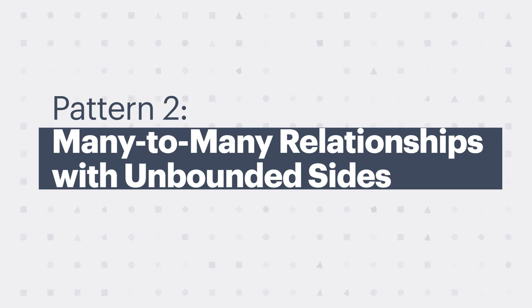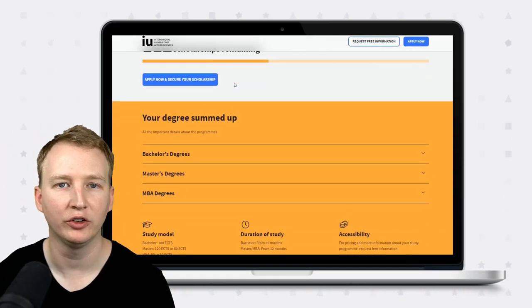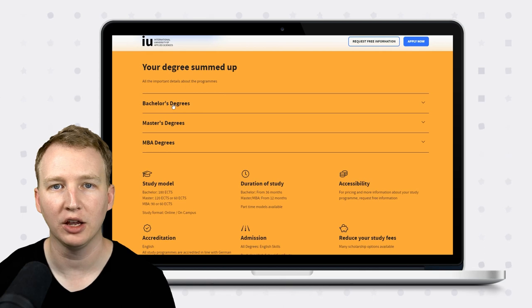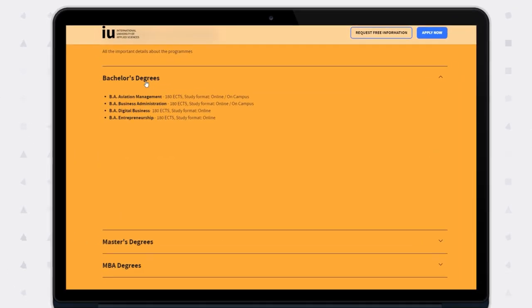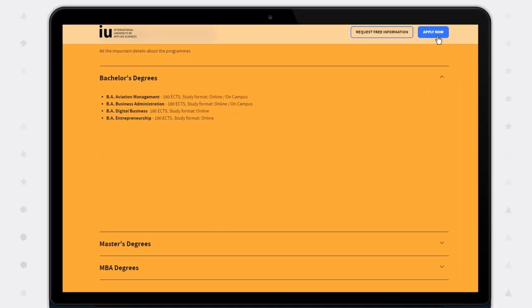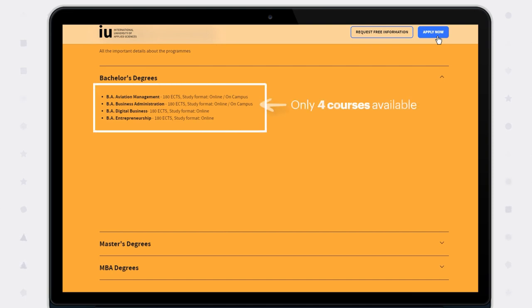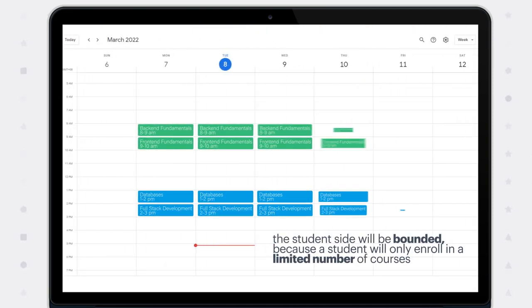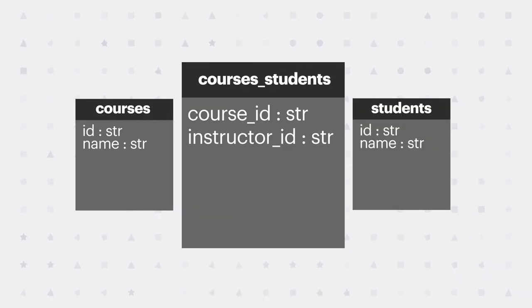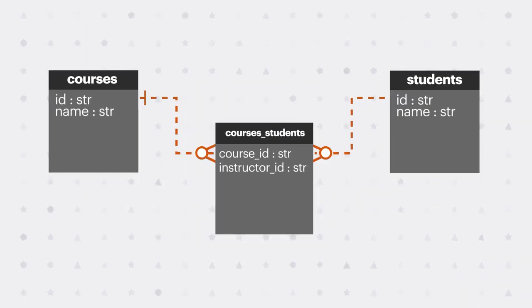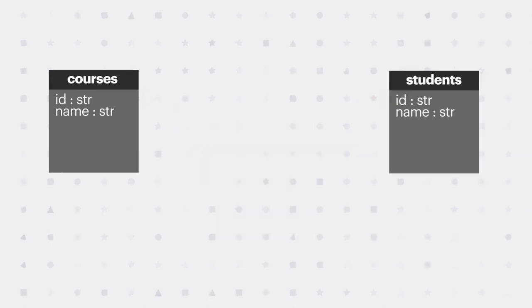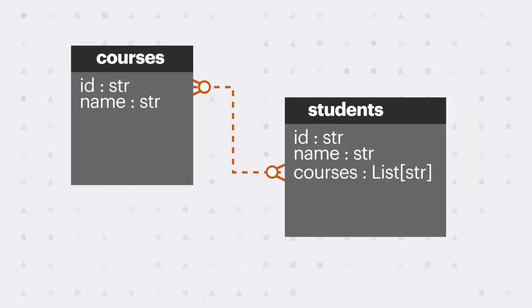Now consider the relationship between courses and students. Given this is an online school, there could be any number of students enrolled in a course — this represents an unbounded many-to-many relationship on the course side. However, the student side is bounded because a student will only enroll in a limited number of courses. In NoSQL, it makes sense to model this using an embedded list on the bounded side of the relationship, so you would store a list of course keys in each student document.